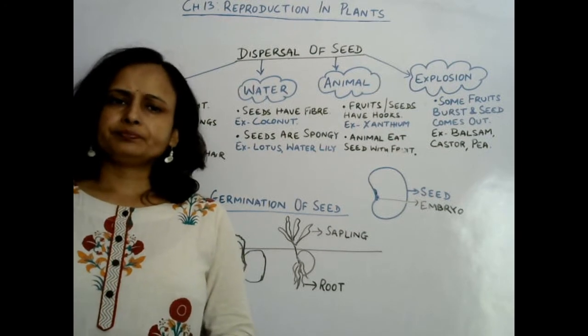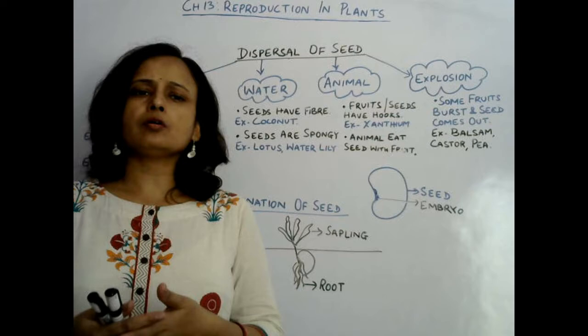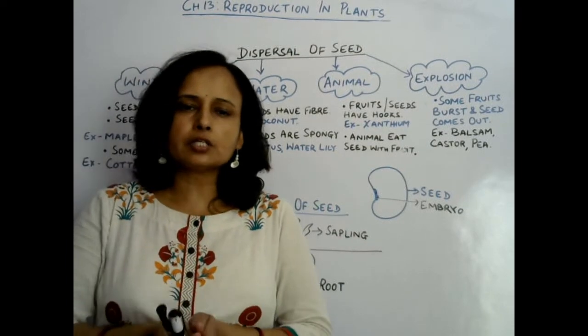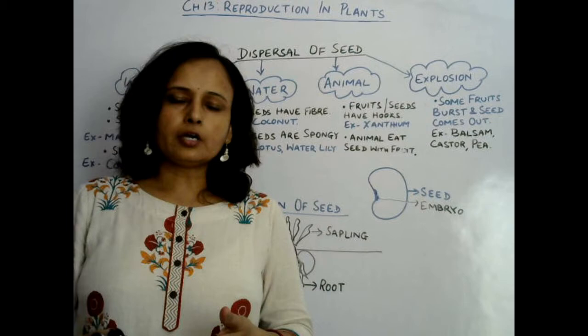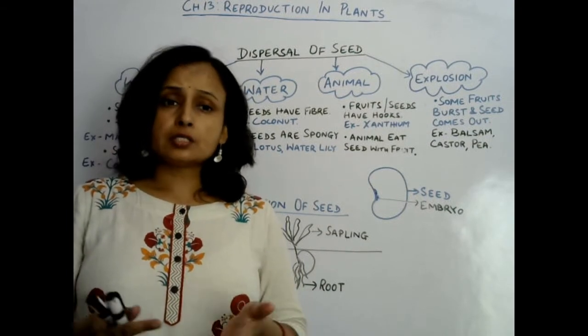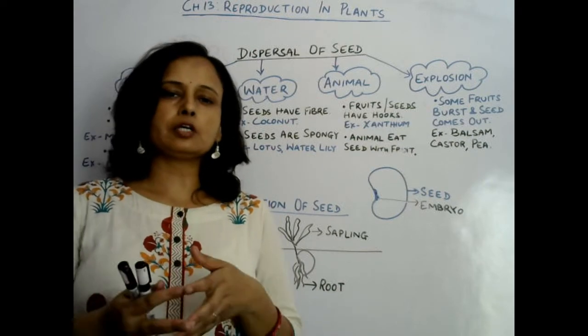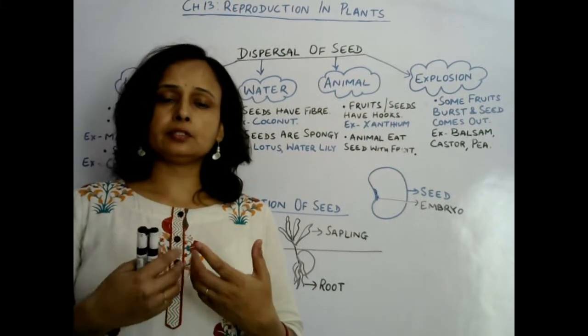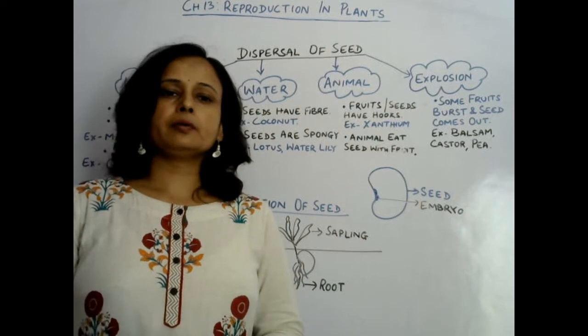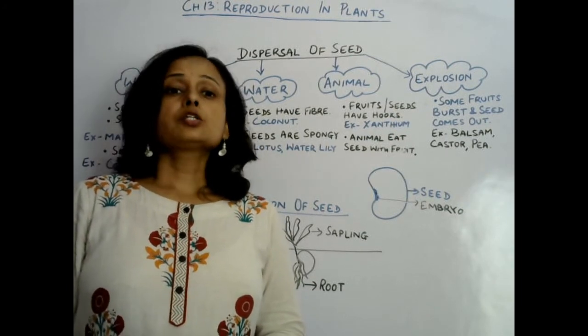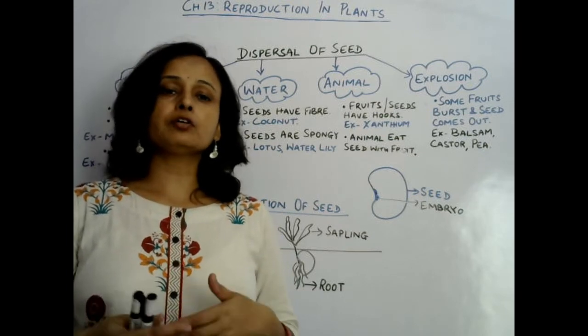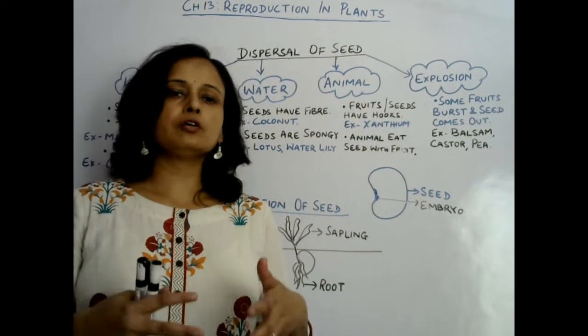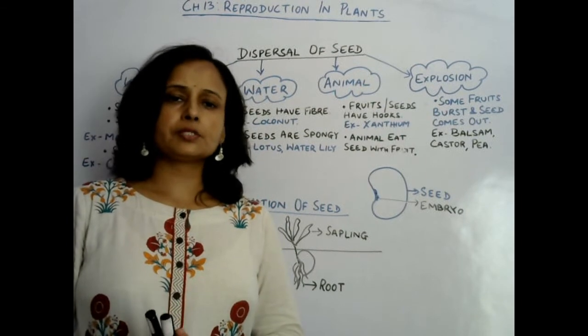Dispersal is necessary because if all seeds grow in one place only, they will compete with each other for growth, for sunlight, for nutrition, for air, for everything. None of the plants will get proper nourishment for growth. So to decrease this competition and for proper growth of a plant, dispersal of seed is essential.